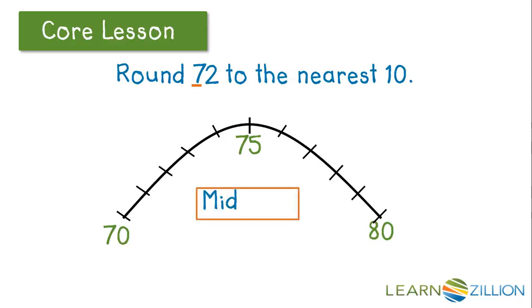If we place 72 on our number line, we can see that it is below the midpoint. So 72 will round down to 70. The seven stays the same and the two turns into a zero because we want to go to the nearest ten.